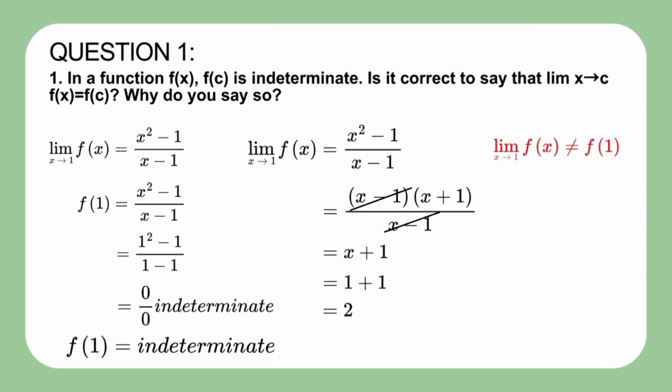Therefore, in this case, it is incorrect to say that the limit of f of x as x approaches 1 is equal to f of 1. Instead, we find that the limit is 2. And to answer our question, it is incorrect to say that the limit of f of x as x approaches c is equal to f of c where f of c is indeterminate.